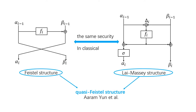In the classical setting, Aaram Yun et al. considered that the Lai-Massey structure has the same security as the Feistel structure, and they proposed the quasi-Feistel structure. Three-round Feistel structure and Lai-Massey structure are CPA secure. Four-round Feistel structure and Lai-Massey structure are CCA secure.